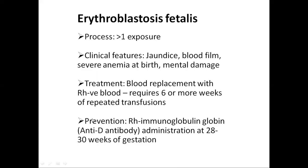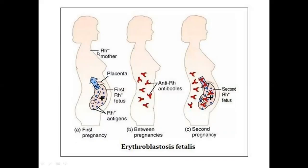To prevent erythroblastosis fetalis, anti-D antibodies are given to the mother during the antenatal period at 28 to 30 weeks of gestation, or within 48 hours after delivery. This neutralizes the Rh antigen. This figure shows the mother is Rh negative and the fetus is Rh positive; antigen from the baby enters the mother via the placenta, anti-D antibodies develop between pregnancies, and in the second pregnancy these antibodies react with the Rh positive fetus causing excessive agglutination and phagocytosis of RBCs.